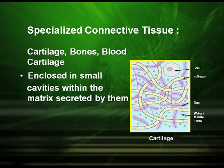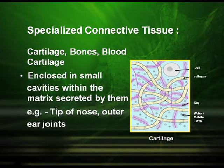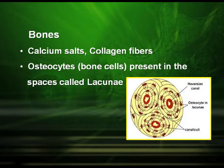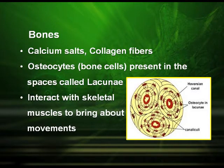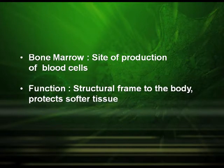Cartilage tissues are enclosed in small cavities within the matrix secreted by them, and are found at the tip of the nose and in the external ear. Bones are made up of calcium salts and collagen fibers, composed of bone cells known as osteocytes present in spaces called lacunae. Bones interact with skeletal muscles to bring about movement. The bone marrow is the site of production of blood cells, and bones give a structural frame to the body while protecting softer tissues.